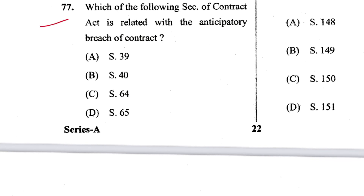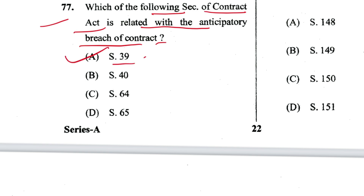Question 77: Which section of the Contract Act is related to anticipatory breach of contract? That is Section 39. A is the answer.